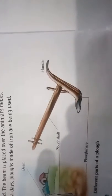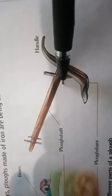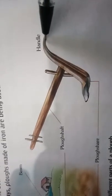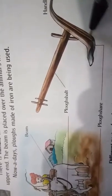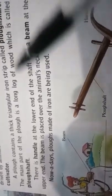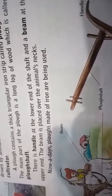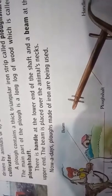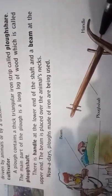Now let's look at how the plough is structured. A plough has three main parts: the plough shaft, plough shear, and handle. It contains a triangular strip called the plough shear, which is somewhat triangular in shape. The main part is a long piece of wood called the plough shaft. The handle is present at the lower end of the shaft.